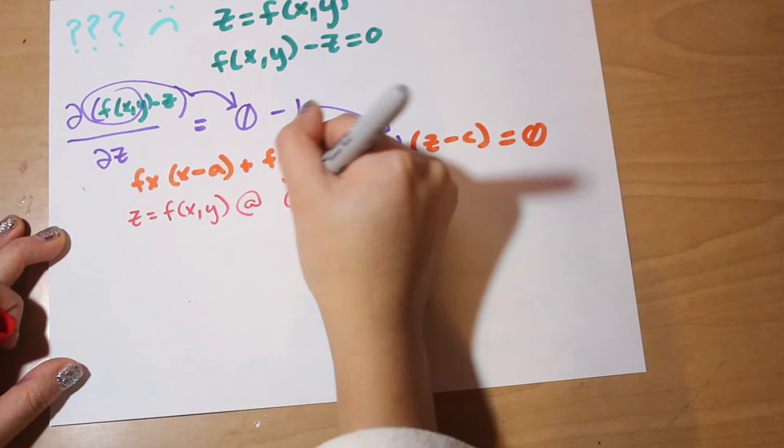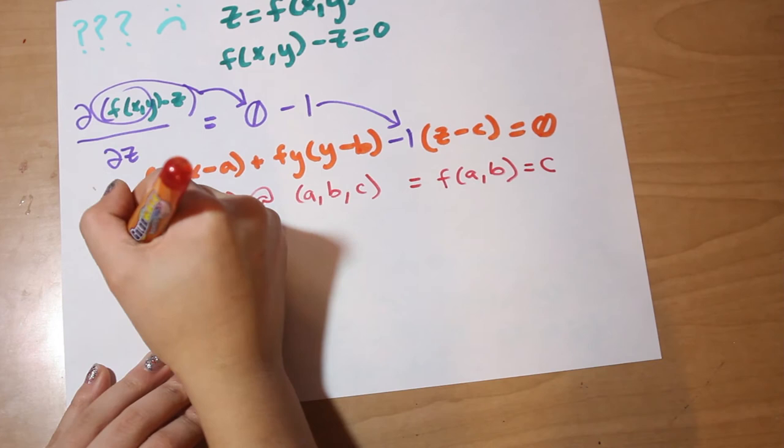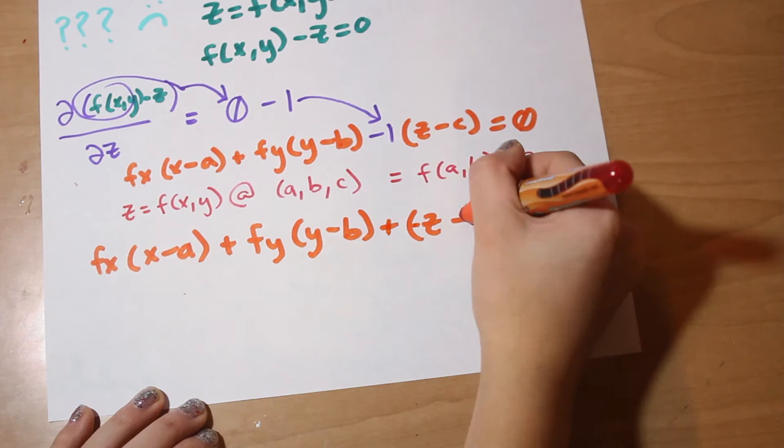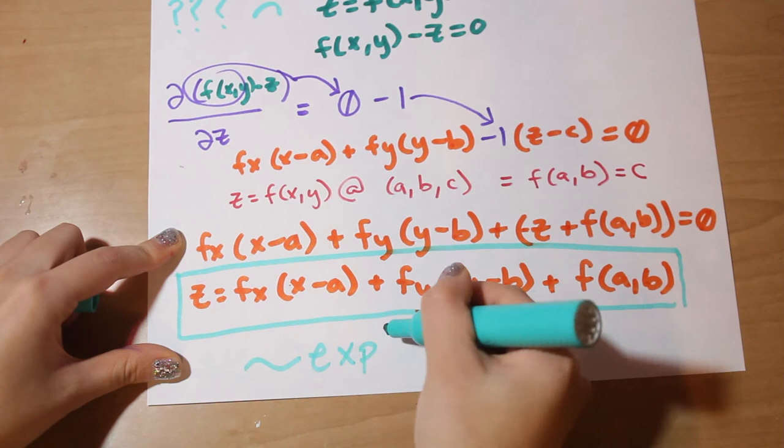If we take all this, we can clean things up a bit more. Wow, what a step up. Now we have that the function f(x, y) equal to z equals fx times (x minus a) plus fy times (y minus b) plus f at (a, b).